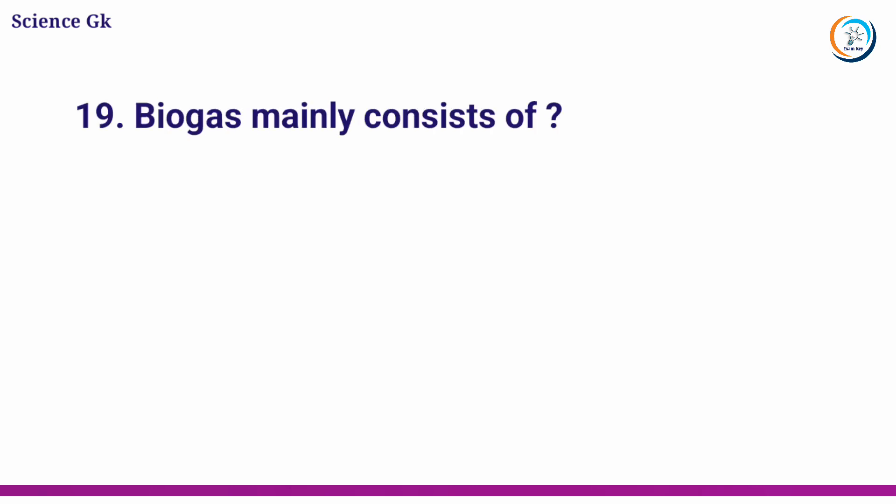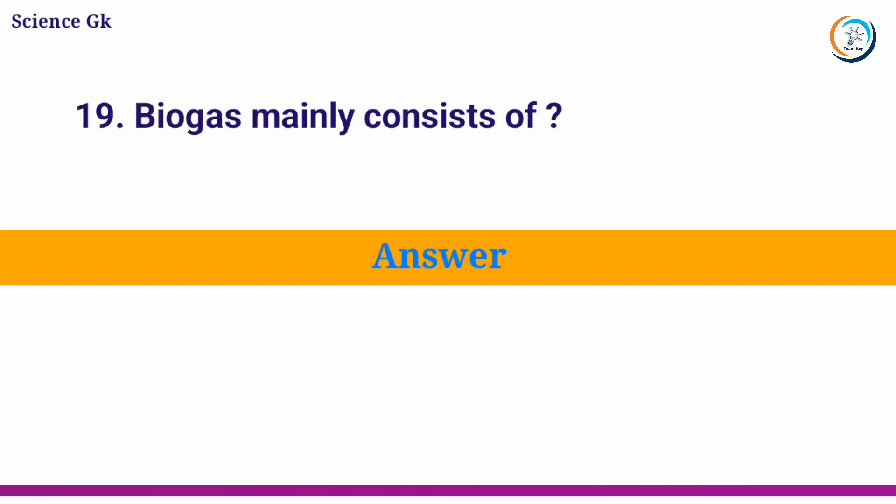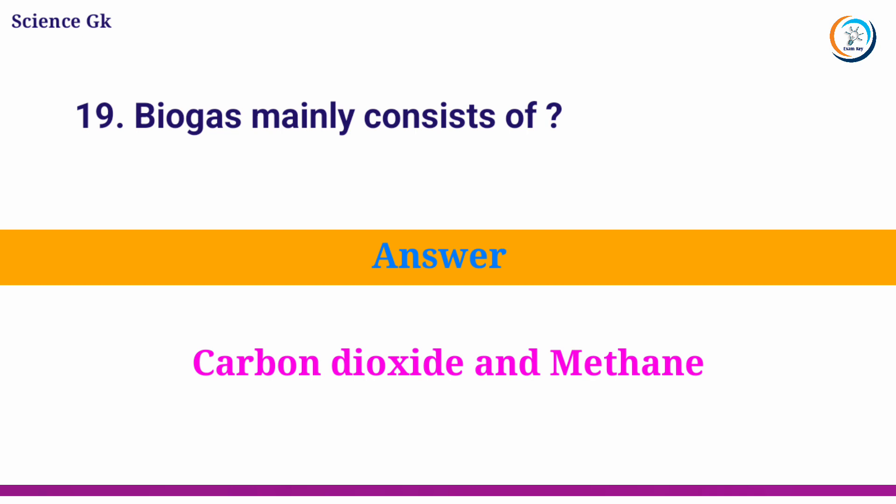Biogas mainly consists of? Answer: carbon dioxide and methane.